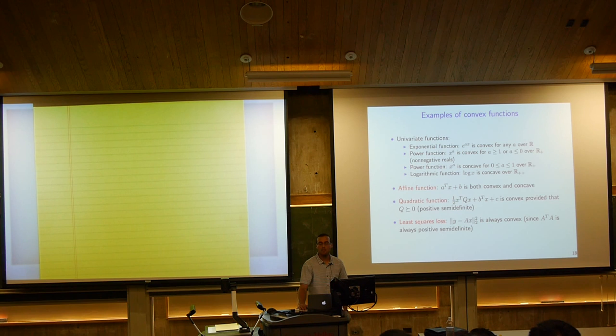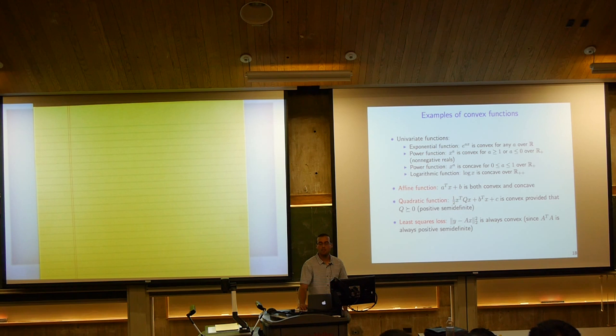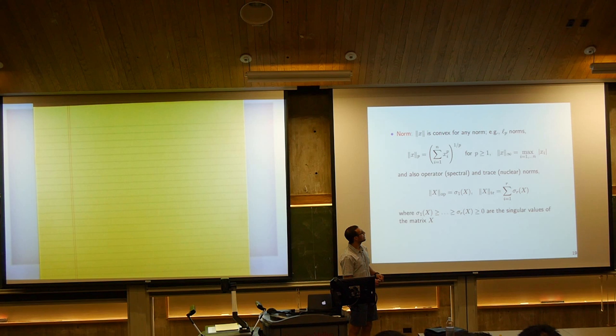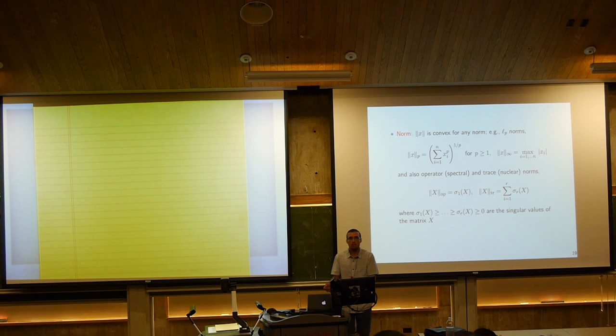That's something you should be comfortable with; if not, you need to brush up on your linear algebra. Norms are always convex, basically just from the definition of norms — applying the properties of a norm, you can check the conditions for convexity directly from the definition.